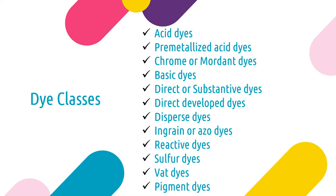Sulfur dyes do dull shades and are predominantly used for navies, blacks, and browns. Vat dyes have great laundering fastness and fastness with perspiration. And then finally, those pigment dyes we talked about — it's actually not a dye, it's a pigment. It just sits on top of the fabric. But in terms of the creation of synthetic or manufactured fibers, it is used as a dye because the pigment is used in the manufacturing process. So again, go through the chart — committed to memory. There will be a couple of exam questions from die classes.